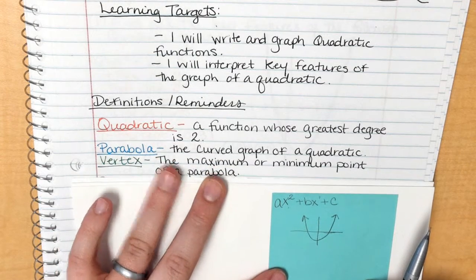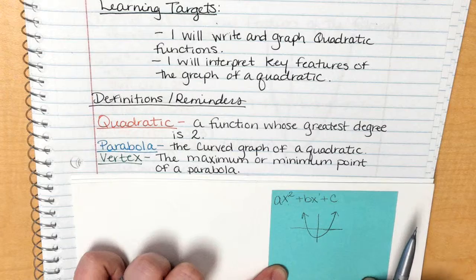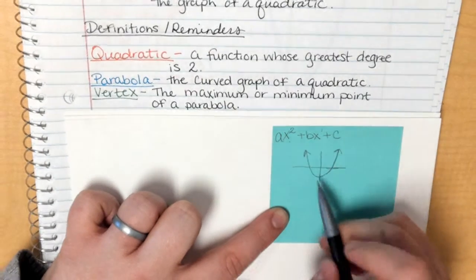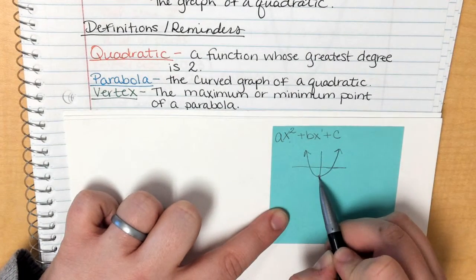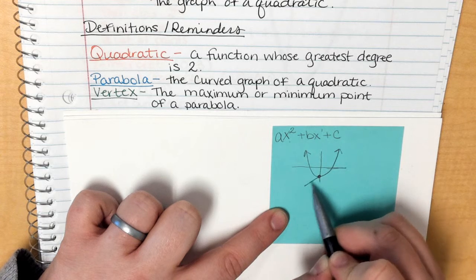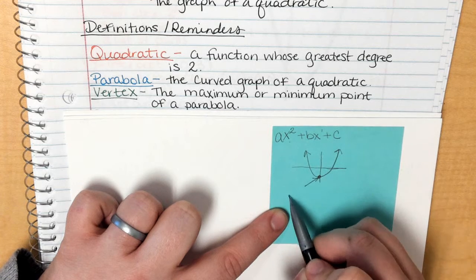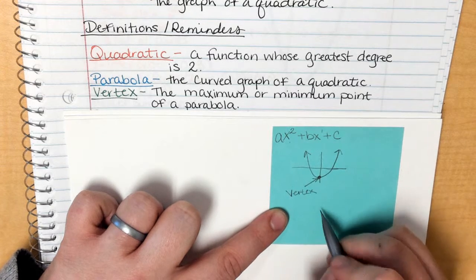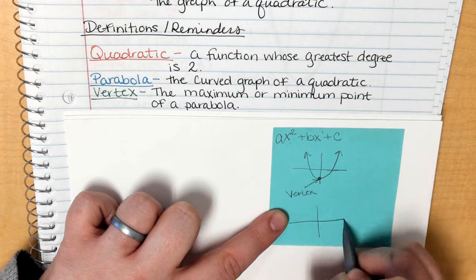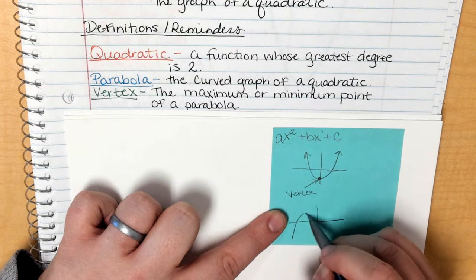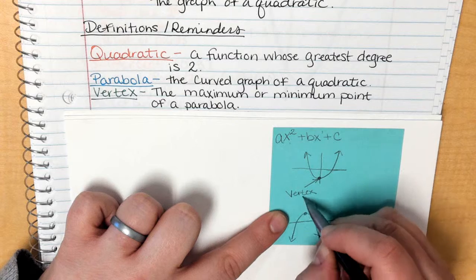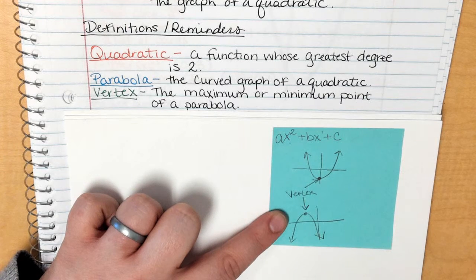The third definition is the vertex. The vertex is the maximum or minimum point. This point here is a minimum point, and it is the vertex. If the parabola opens downward, the top point would be the vertex — both are your vertex.